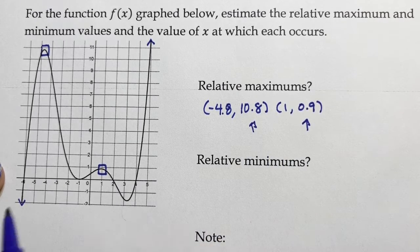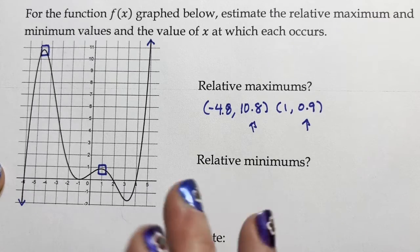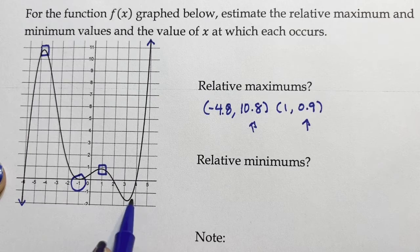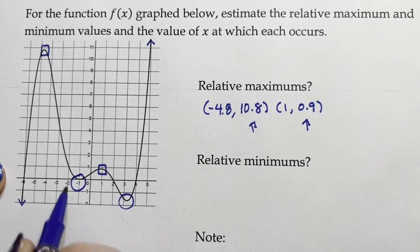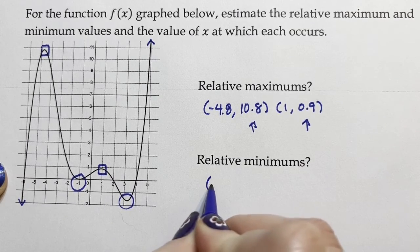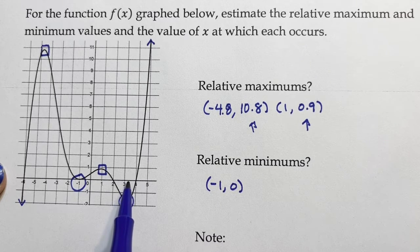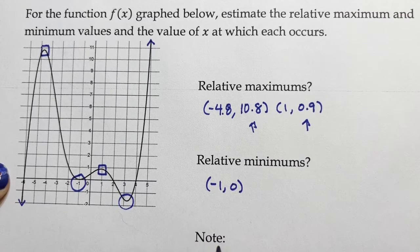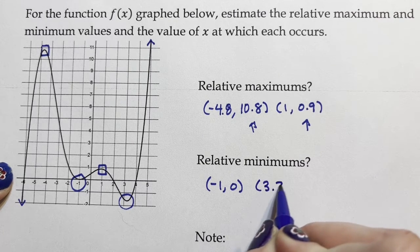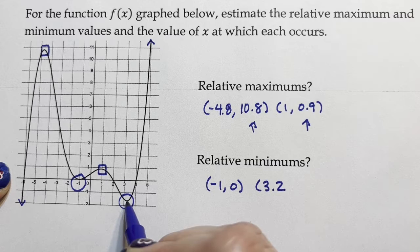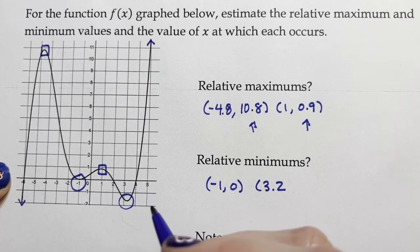The minimum—same idea. If we could zoom in, this is a relative minimum, this is a relative minimum. This relative minimum looks like (-1, 0). This relative minimum looks like the x that gets us there is about 3.2, and the value looks like about negative 1.5.